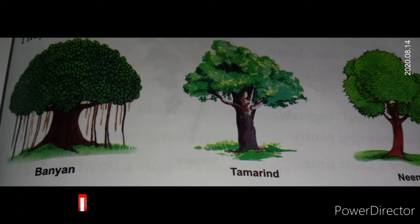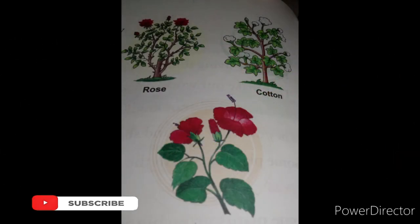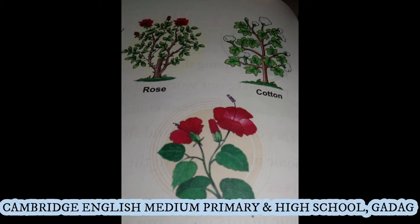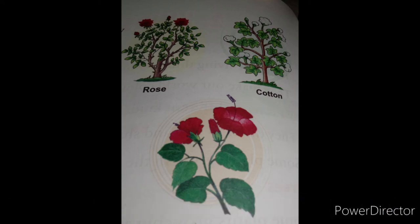Next, shrubs. The small bushy plants with many branches are called shrubs. Shrubs are smaller than trees, but they have woody stems. They have many branches, grow close to the ground, and look bushy. They live for a few years. Examples: rose, jasmine, hibiscus, and cotton are good examples of shrubs.